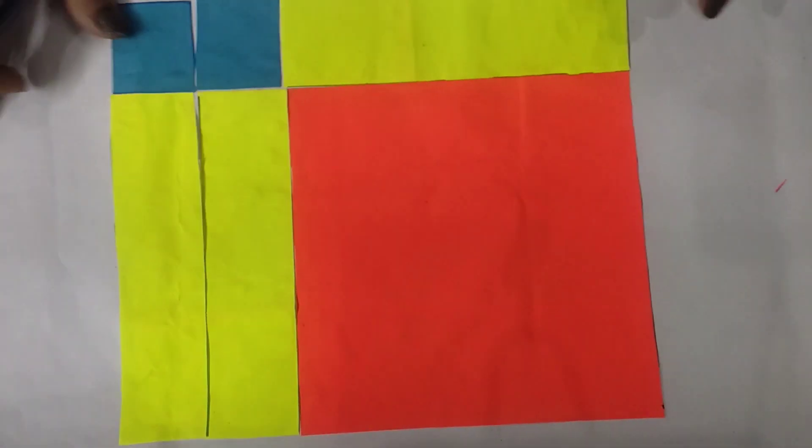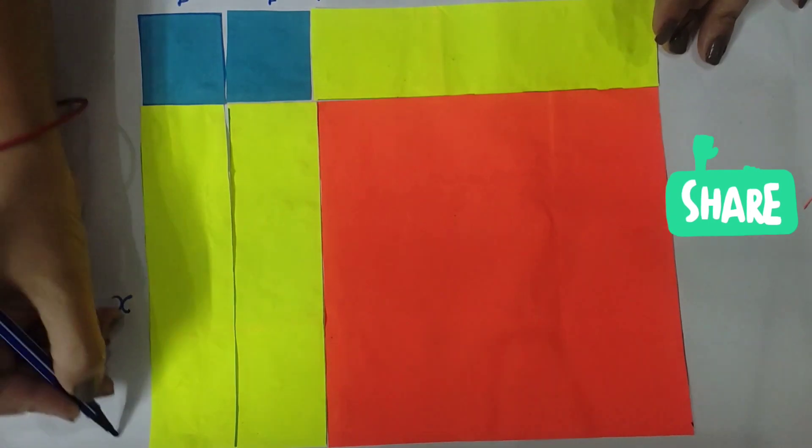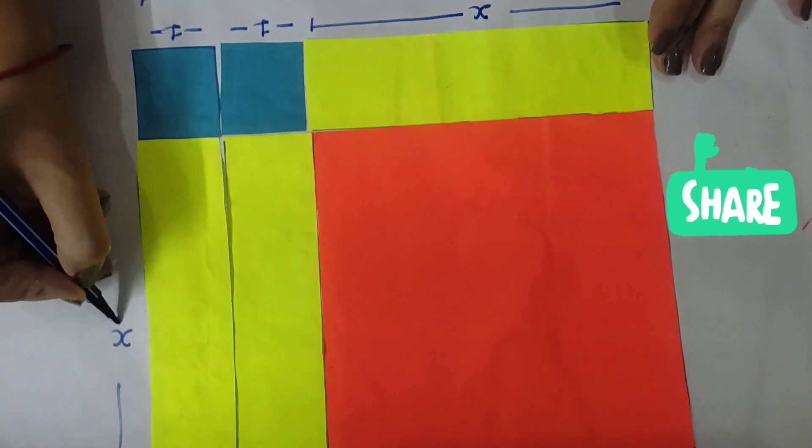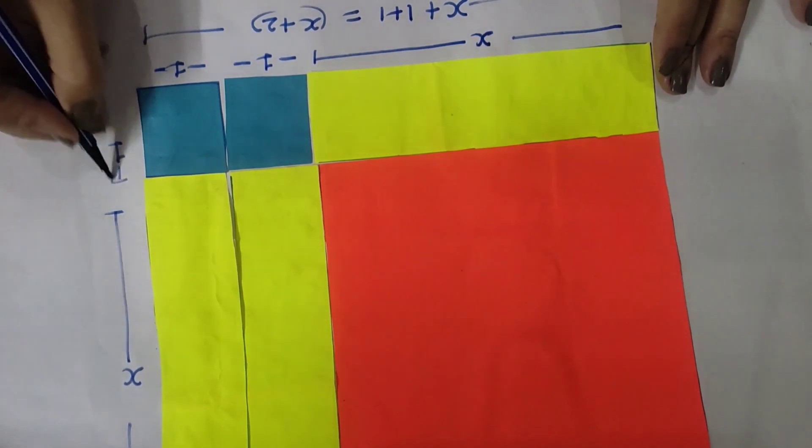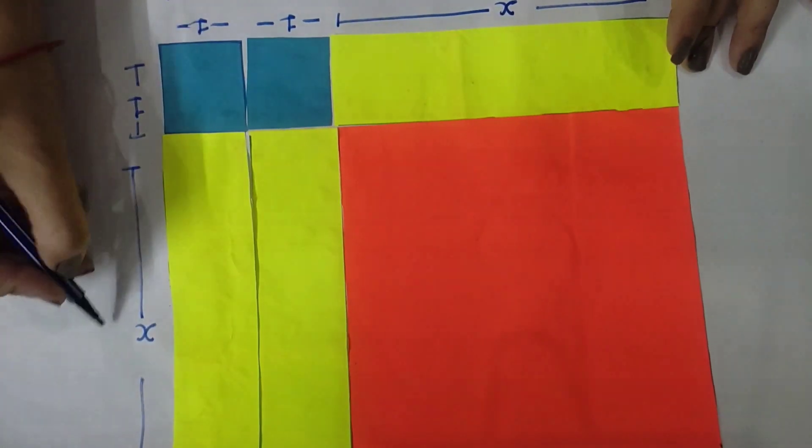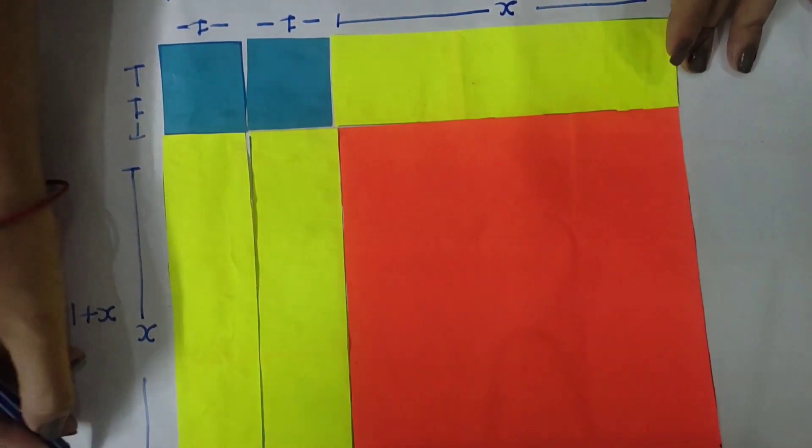And its width is, this is your x. I have already explained in the video. And this portion, this square length is 1. So the width is x plus 1.